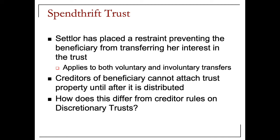The reason we have these issues about whether or not the creditor can reach the property is that we've split up legal versus equitable ownership. Once legal and equitable title are both with the beneficiary, the creditor can reach it — there's no question. The question is: when legal title is held by a trustee for the benefit of a beneficiary, can a creditor reach it, and when?